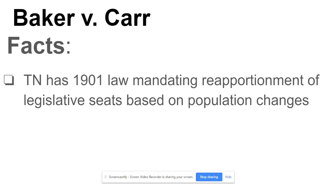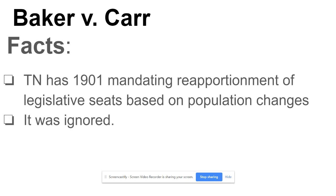Facts of the case: Tennessee had a 1901 law that mandated reapportionment of legislative seats based on population changes. So as population shifted and a census came out, Tennessee was supposed to redraw their boundaries of legislative seats in their state. However, Tennessee passed this law and then completely ignored it — they literally did not change the boundaries.